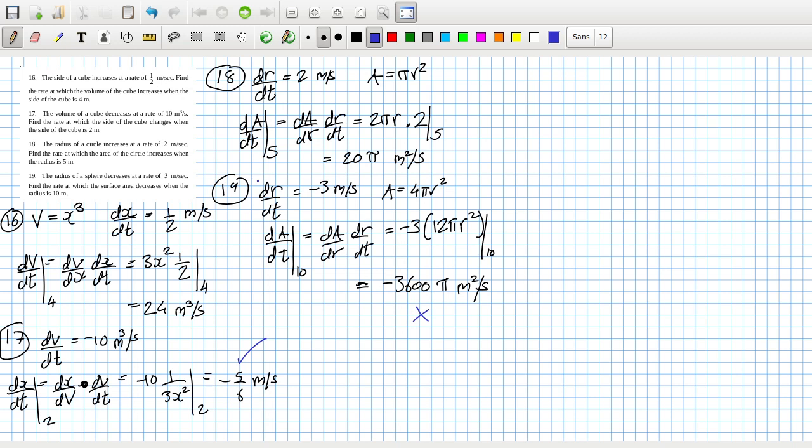Must have misread something here. The radius of the sphere decrease at a rate of 3 metres per second, so that's right, dr dt. The area is 4 pi r squared. Oh, Stephen, you made a dog's dinner differentiating that.